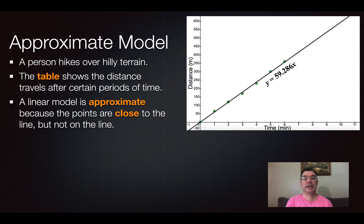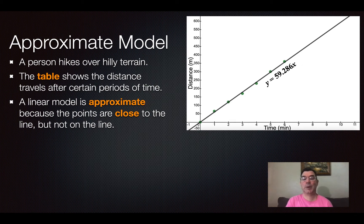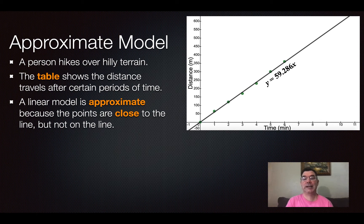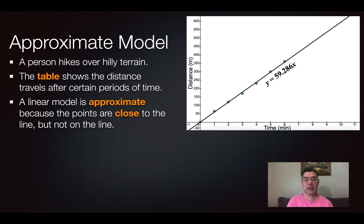So here's a linear model that is approximate because the points that were in the table are graphed on the graph and the line is also graphed, but the points aren't exactly on the line. They are very close to the line.